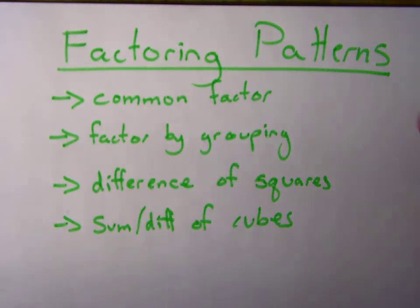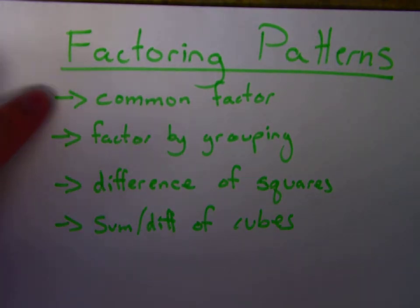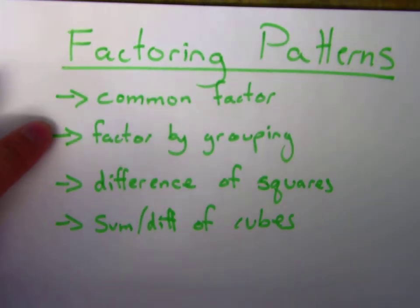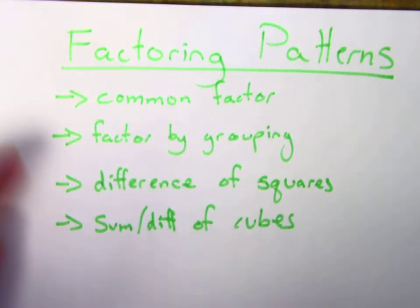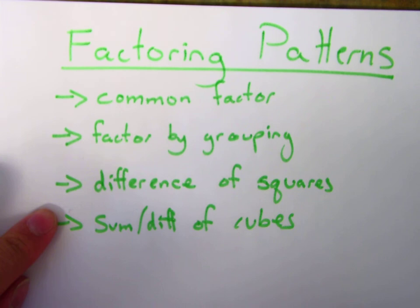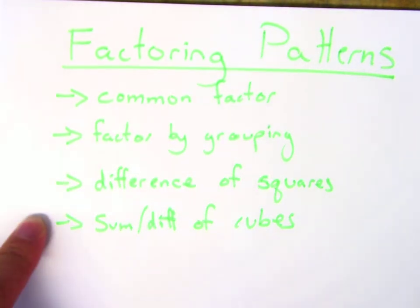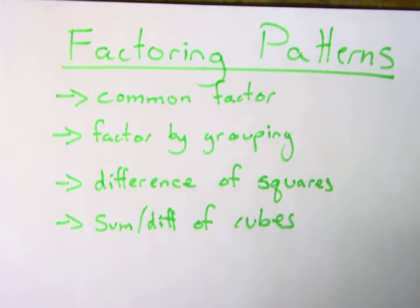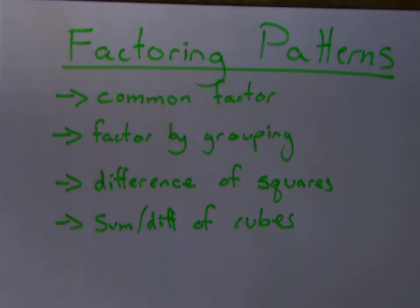In this video I'm going to go over factoring patterns. The ones we'll look at are: factoring out a common factor, factoring by grouping, difference of squares, and then the sum or difference of cubes. The whole point of this is to take a polynomial in standard form and factor it so we can look at the zeros and figure out the multiplicities.